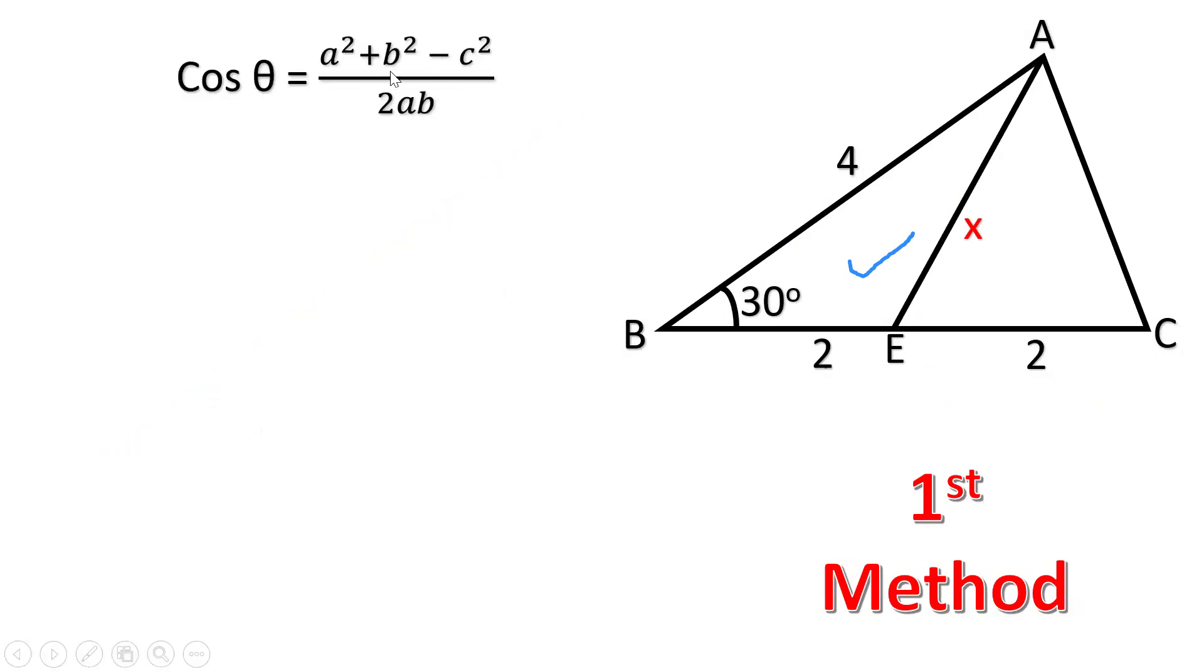Cos theta equals A square plus B square minus C square upon 2AB. What are A and B? A and B are those sides which make the angle.